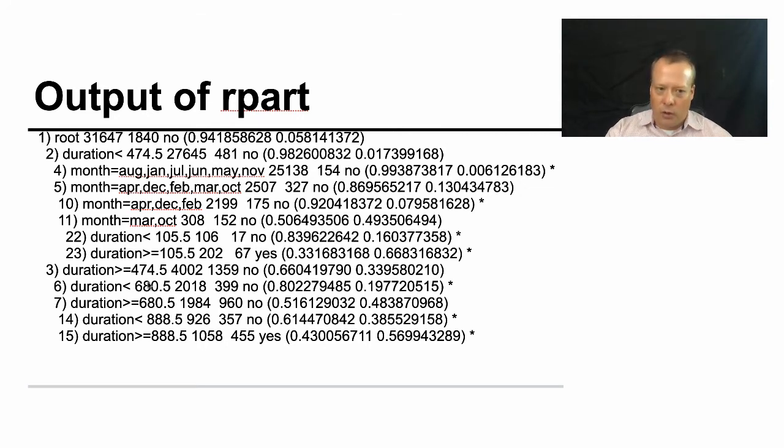This one is driven entirely by duration, essentially saying if the person talked to whoever contacted them last time for more than 888.5, which you've got to assume is seconds and not minutes, then they are almost surely going to accept the offer. So if they talked to the previous telemarketer who reached out to them for more than, you know, what is it, 900 seconds, that's a lot, that's like 15 minutes, then they're going to accept this offer.